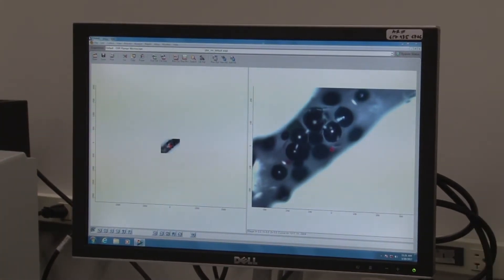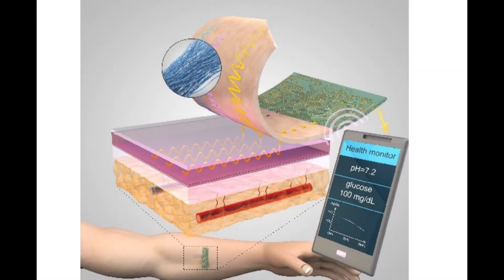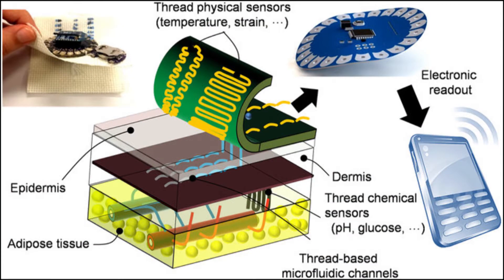These dyes are ones that change color when they sense a target in the environment. You could imagine these threads sutured into a bandage or as a surgical suture itself that changes its color when there is infection.